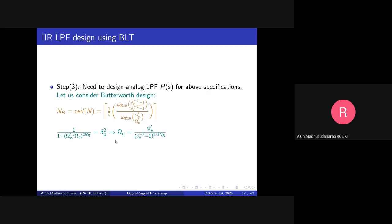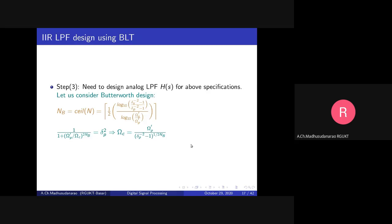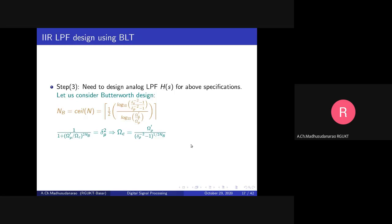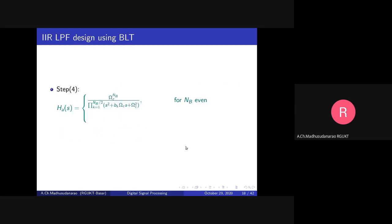The 3dB cutoff frequency can be found with the following expression. We already saw this in analog filter design. Once we have n and omega_c, we are done with the analog filter design. H(s) equals this expression: if n is even, we use one expression; if n is odd, we use the other expression.